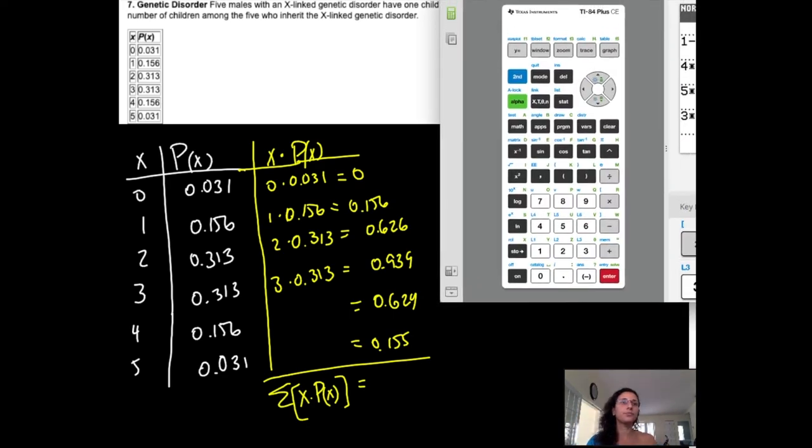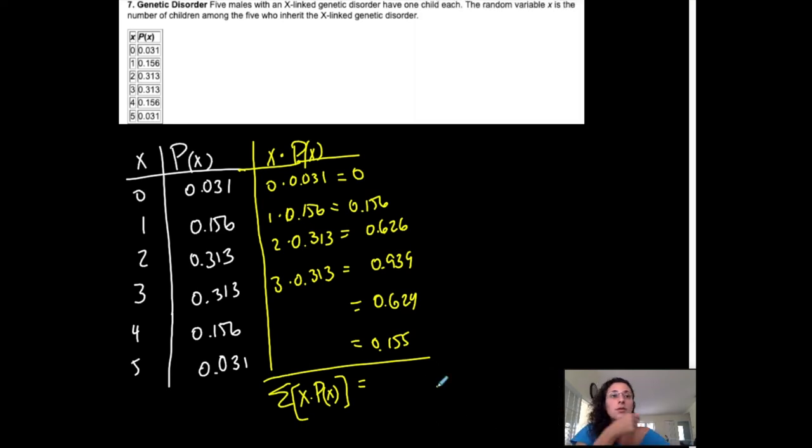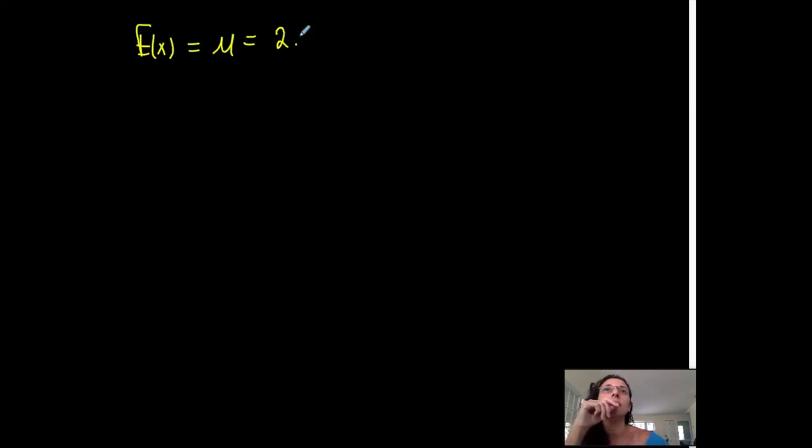I'm going to bring it to the next page, which is also known as your expected value for this particular scenario, or your population mean for this particular situation. So 0.156 plus 0.626 plus 0.939 plus 0.624 plus 0.155. So my expected outcome for this scenario is 2.5. Or my population mean, my mean, is 2.5.